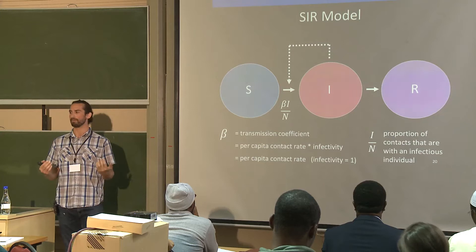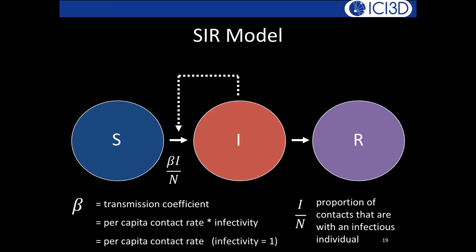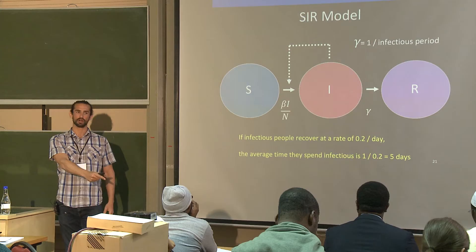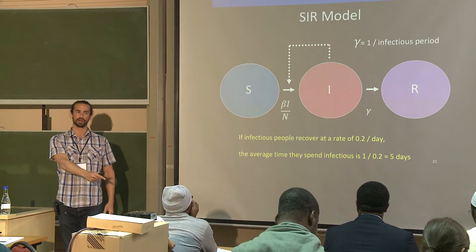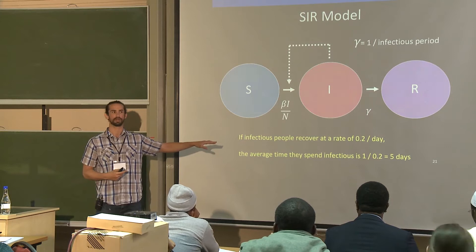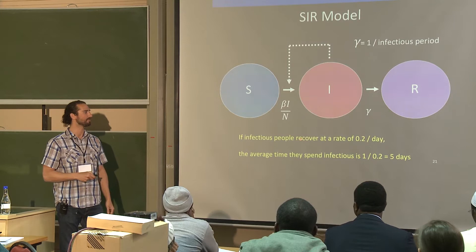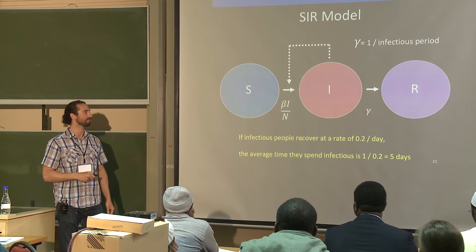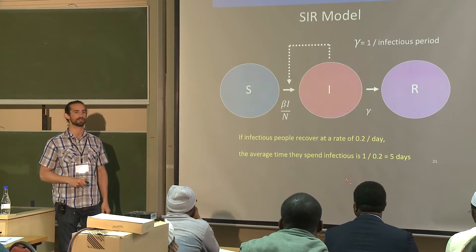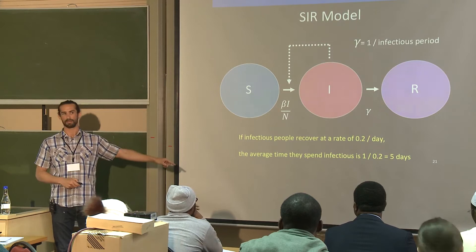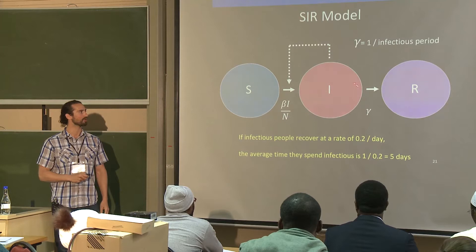The flow from I to R is simply the recovery rate, gamma. The average time spent infectious is 1/gamma — so if people recover at 0.2 per day, the average infectious period is 5 days. Importantly, recovery does not depend on what other people are doing — it's an independent process.